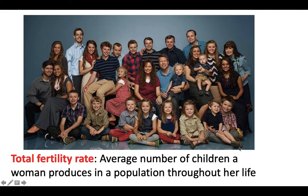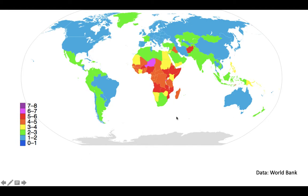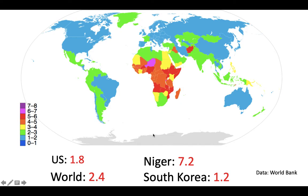Just a reminder: total fertility rate is the average number of children a woman produces throughout her entire life — not per year, that was my mistake. Looking at this map showing total fertility rate around the world: blue is pretty low at zero to one, purple is pretty high at seven to eight babies per woman. The United States has a TFR of about 1.8, the world average is about 2.4, the highest is Niger at about 7.2, and the lowest is South Korea at about 1.2 babies per woman.